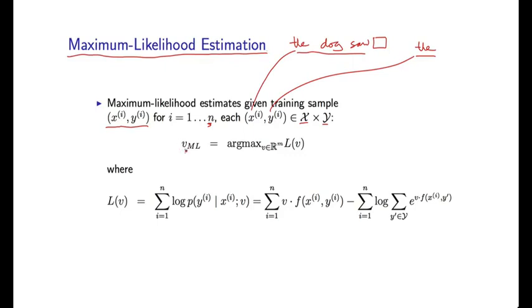And that means that the maximum likelihood parameters, v sub ML, are going to be the parameter values, out of the space of all possible m-dimensional vectors, that maximize some function, L of v. So L of v is going to be a function that takes a parameter vector as input and returns some value.